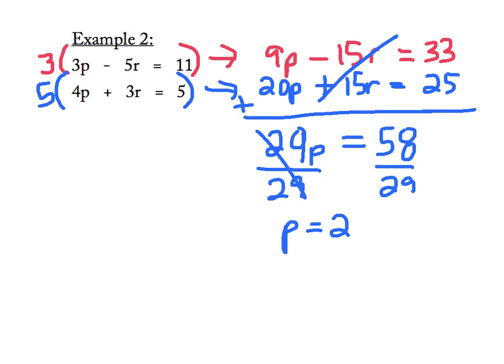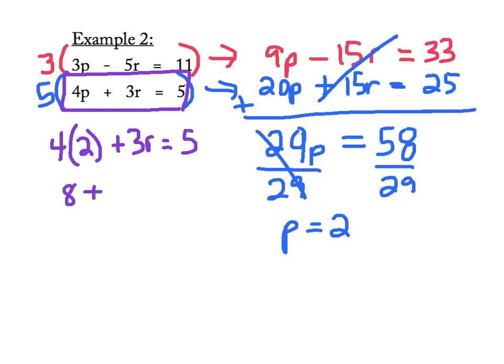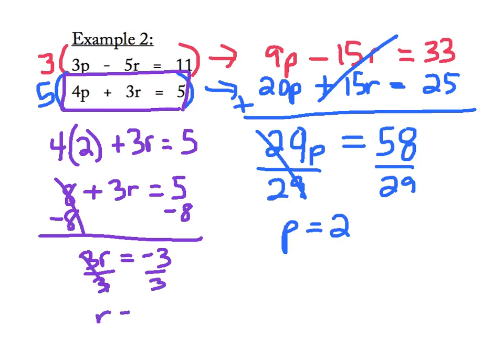Now that I know that P value, I'm going to substitute that into one of my original equations to find the value of R. I like positives, so I'm going to substitute that P value into the second equation. 4 times my P value plus 3R equals 5. And now I'm going to subtract 8 on both sides. That's going to cancel out these 8s, and I'll have 3R equals negative 3. Divide both sides by 3, and R is equal to negative 1.